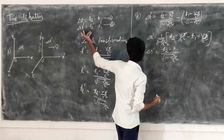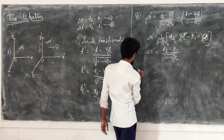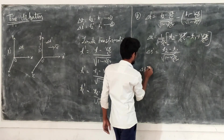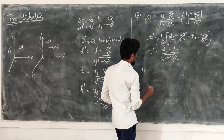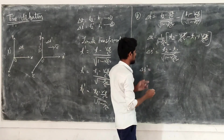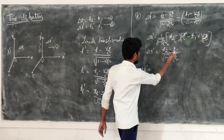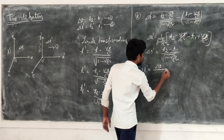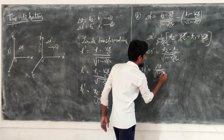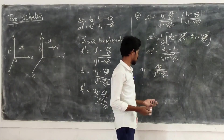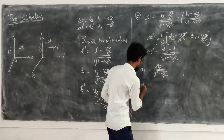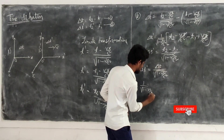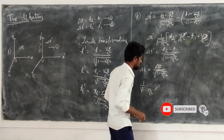So delta T' equals T2 minus T1, divided by the square root of 1 minus V squared over C squared. Since T2 minus T1 equals delta T from equation number 1, we have delta T' equals delta T divided by the square root of 1 minus V squared over C squared. The factor 1 over the square root of 1 minus V squared over C squared is greater than 1.